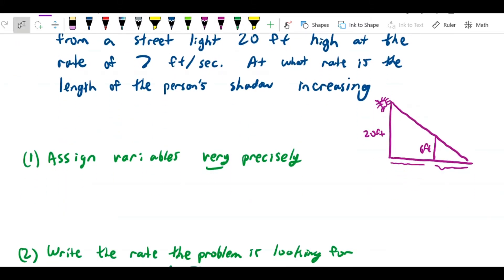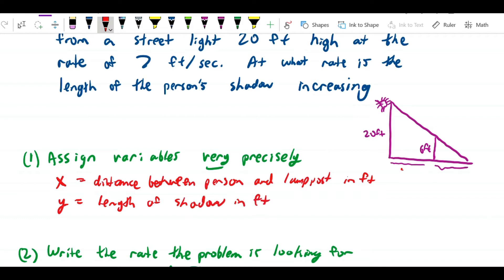So let's assign variables very precisely again and say that x... I realize I'm using these and usually we use x for horizontal and y for vertical. I'm going to just call them x and y but even though they're both horizontal distances. So x is equal to distance between person and lamp post in feet. Let's say that y is equal to the length of the shadow in feet. So we can see here that this is going to be x and this is y. So we really just have two horizontal distances.